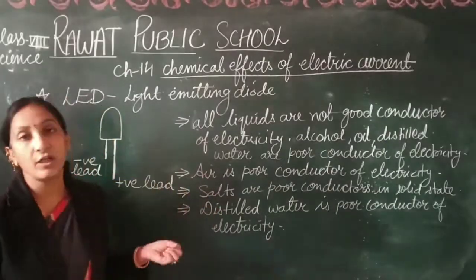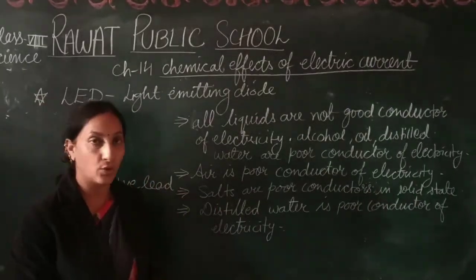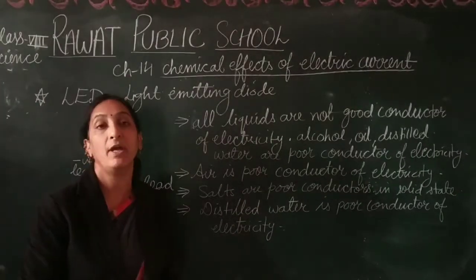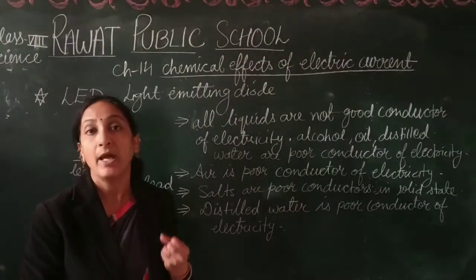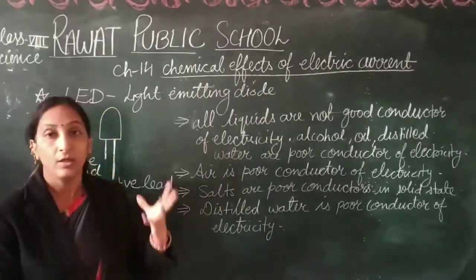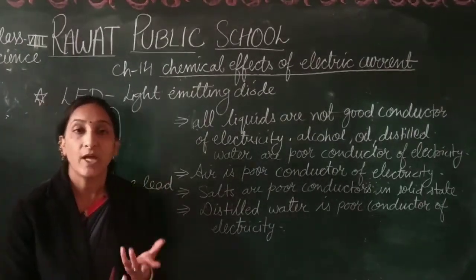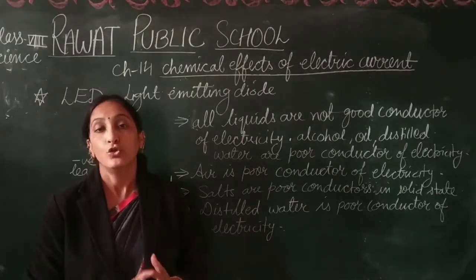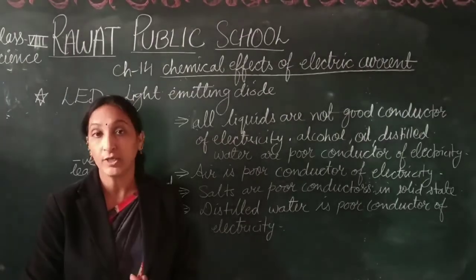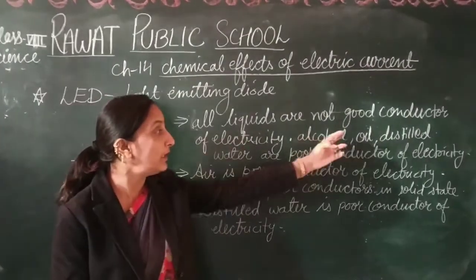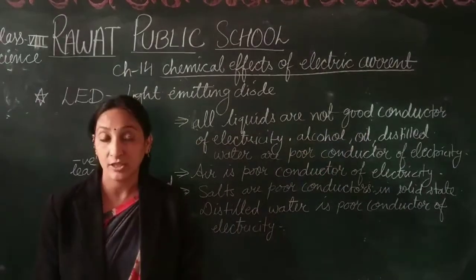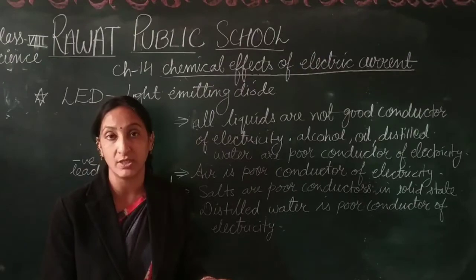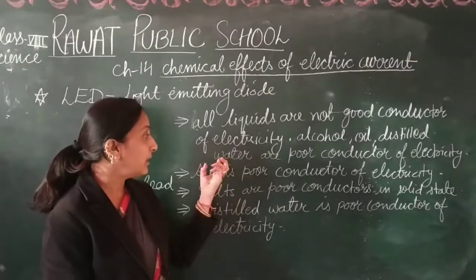We can detect that current is flowing through the circuit. So where the current is very weak, we can use an LED instead of a bulb. The conclusion is that all liquids are not good conductors of electricity — for example, alcohol, oil, and distilled water are poor conductors.